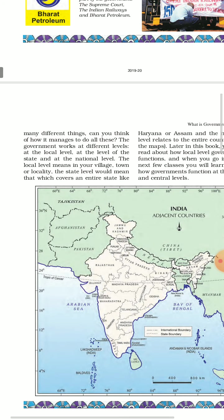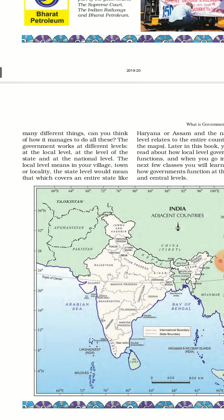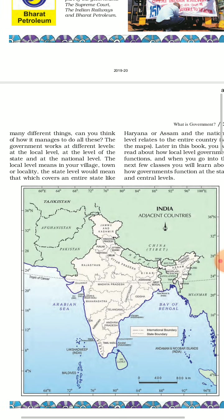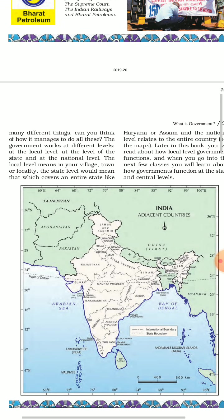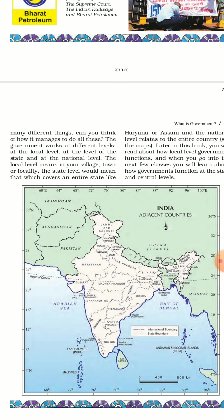The three levels are: 1. Central, 2. State, and 3. Local. The government works at different levels – at the local level, at the level of state, and at the national level.